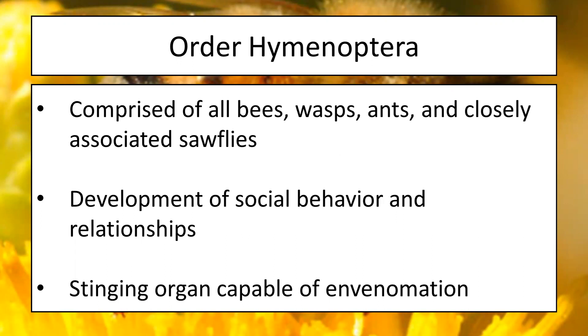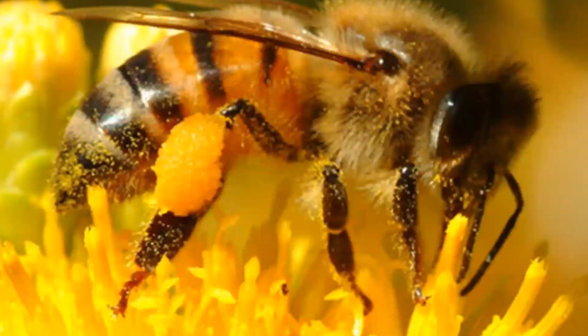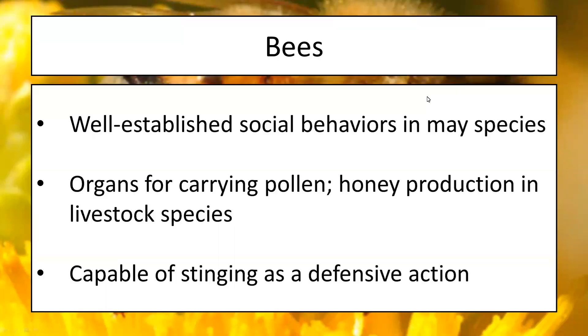Sometimes that defensive structure is so radically developed that those members aren't capable of consuming food themselves — and that is generally just in the case of ants. Now let's take a close look at our bee friend here. Bees, amongst all insects in this group, have some of the most well-established social behaviors, only being surpassed by ants.